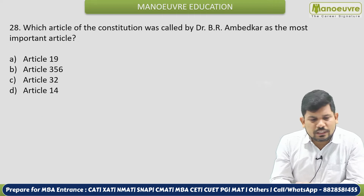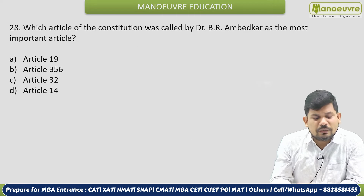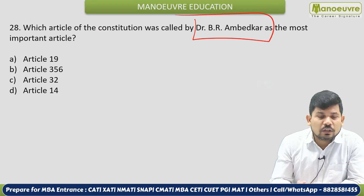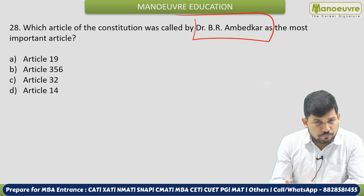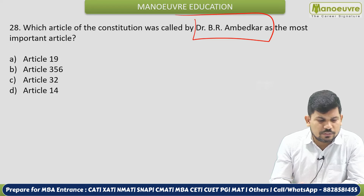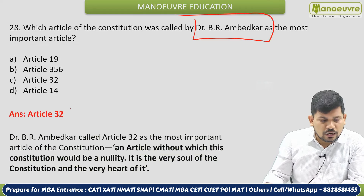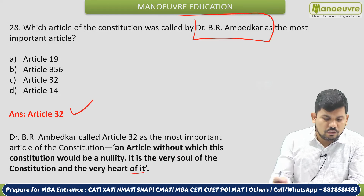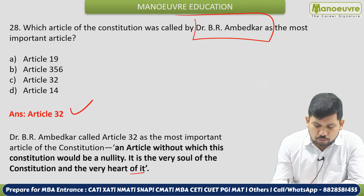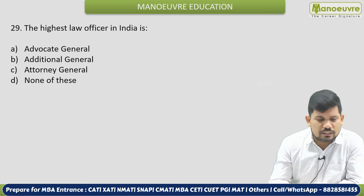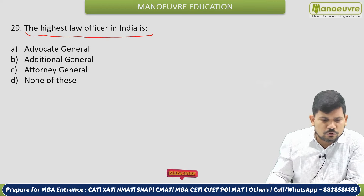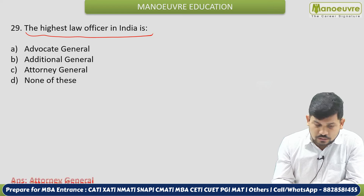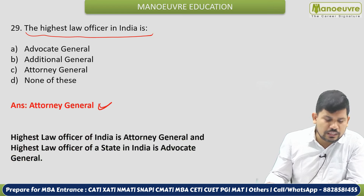Next: Which article of the Constitution was called by B.R. Ambedkar the most important article? Related to B.R. Ambedkar — he was also the head of the Drafting Committee. Options: Article 19, 356, 32, or 14. The correct answer is Article 32 — as per Ambedkar it is the very heart and soul of the Indian Constitution. Next: Who is the highest law officer in India? The correct answer is the Attorney General of India. At the state level, it is the Advocate General.